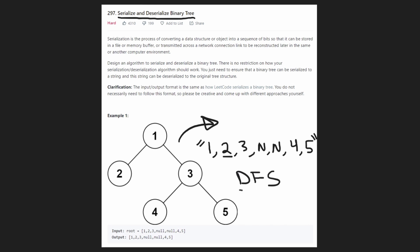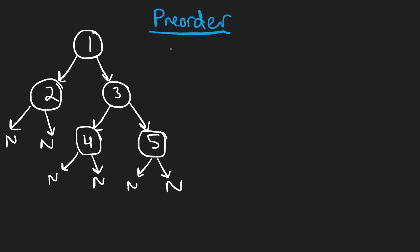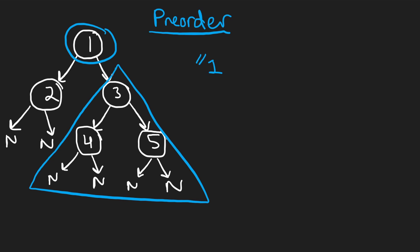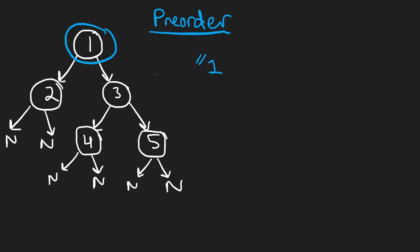I'll show the depth-first search approach using pre-order traversal because it requires a little less code. So let's see what a tree converted into pre-order traversal as a string would look like. The first value is one — pre-order means we do the first node, then recursively do the left subtree, then the right subtree. We'll use a comma as a delimiter to separate values.